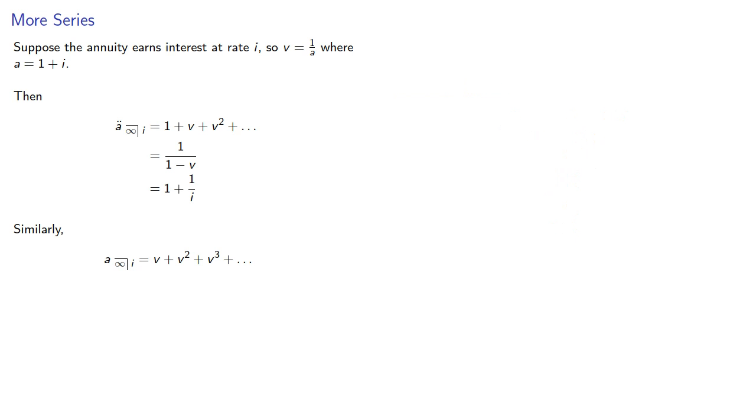Now by essentially the same argument, a angle infinity at interest rate i, again that's the sum of the discount functions, we'll remove the factor of v, we can use our infinite geometric series summation formula, and this time we can simplify further to get one over i.